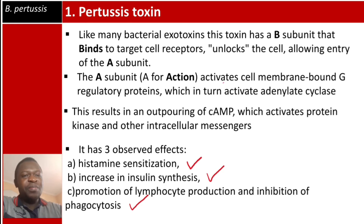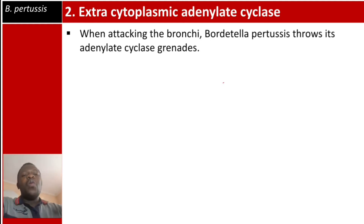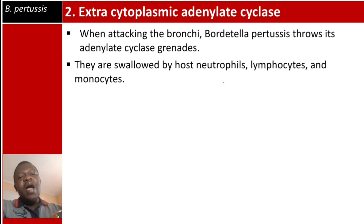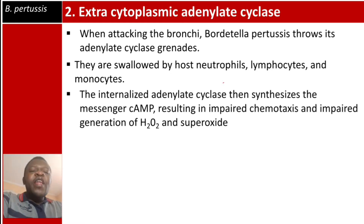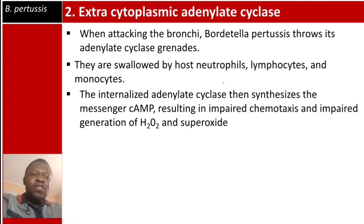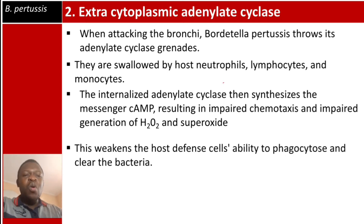The second toxin is extracytoplasmic adenylate cyclase. When attacking the bronchi, Bordetella pertussis throws its adenylate cyclase 'grenades,' which are swallowed by host neutrophils, lymphocytes, and monocytes. The internalized adenylate cyclase then synthesizes cyclic AMP, resulting in impaired chemotaxis and impaired generation of hydrogen peroxide and superoxide radicals — weakening the host defense cells' ability to phagocytose and clear the bacteria.